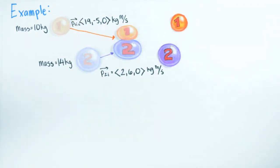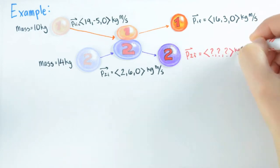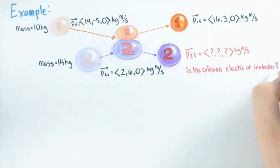After the collision, object 1 is observed to have a final momentum P1 final as shown. Questions. What is the momentum of object 2 after the collision and is the collision elastic or inelastic?